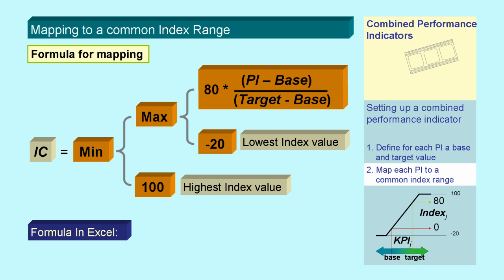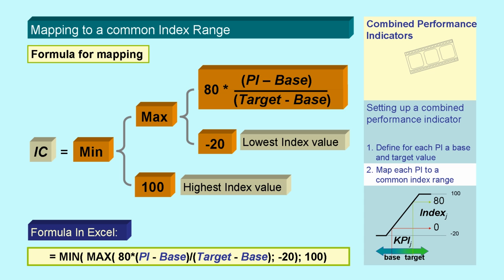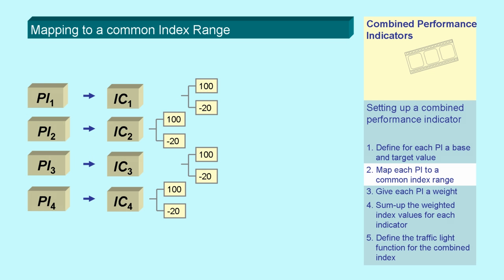In Excel, this formula can be written as shown here. So all indicators are now represented as index components in the range minus 20 to plus 100.